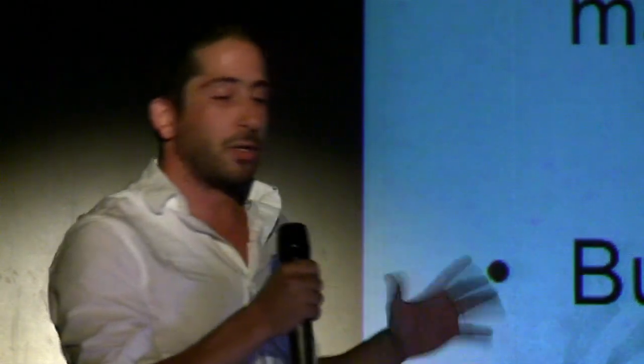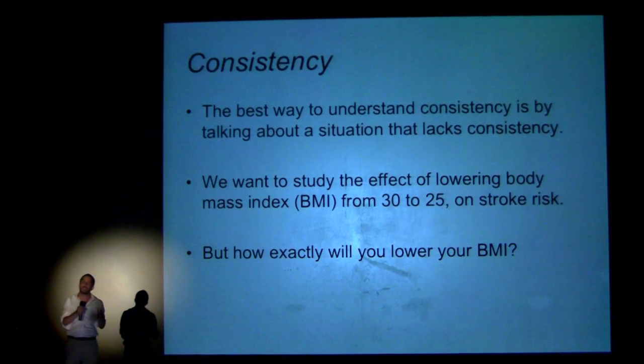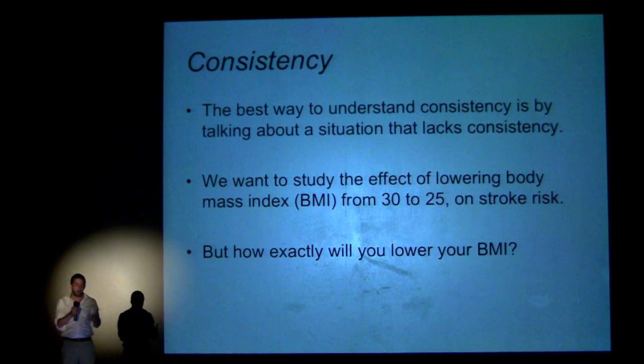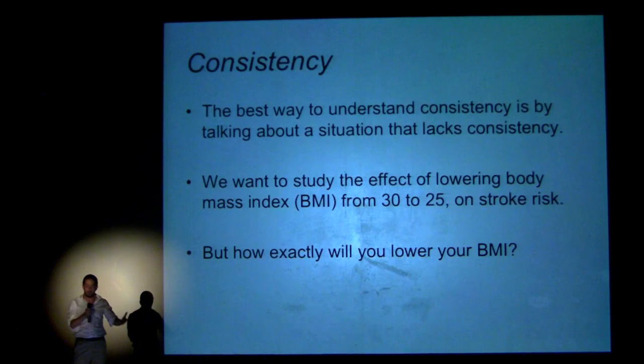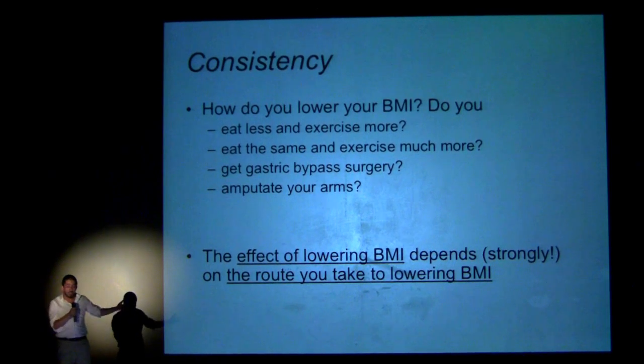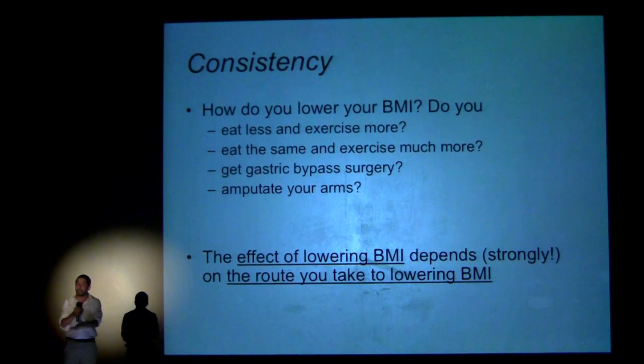The best way to think about consistency is by talking about a situation which lacks it. Let's say we want to study the effect of lowering body mass index from 30 to 25 on the risk of stroke. How exactly are we going to lower your body mass index? Are you going to eat less and exercise more? Eat the same and exercise much more? Get gastric bypass surgery? Have your arms amputated? The effect of lowering your BMI strongly depends on the route we take, and ignoring that makes things difficult.